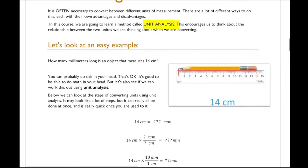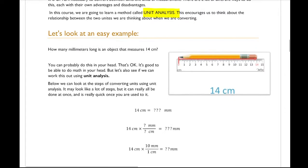For an easy example, consider an object that measures 14 centimeters long, like a pencil. We want to think about how many millimeters that is. You might be able to do that in your head right away and say 14 centimeters is 140 millimeters. But how did you figure that out? That process is essentially what we're going to put down on paper and use for any type of unit conversion — that's where unit analysis comes from.